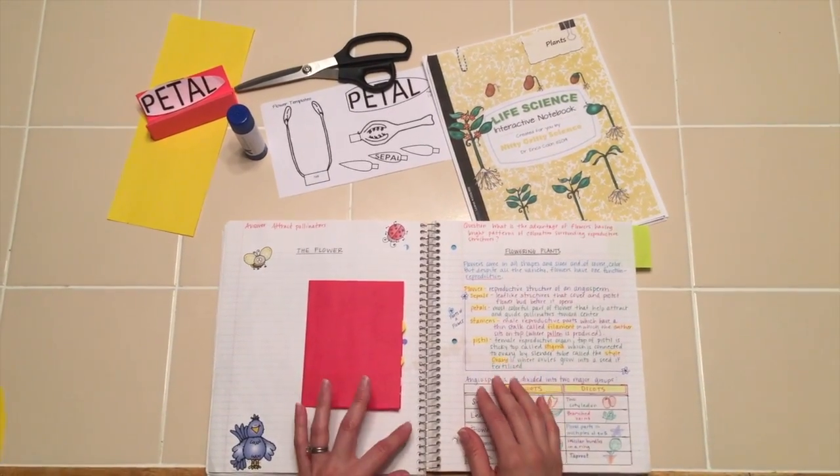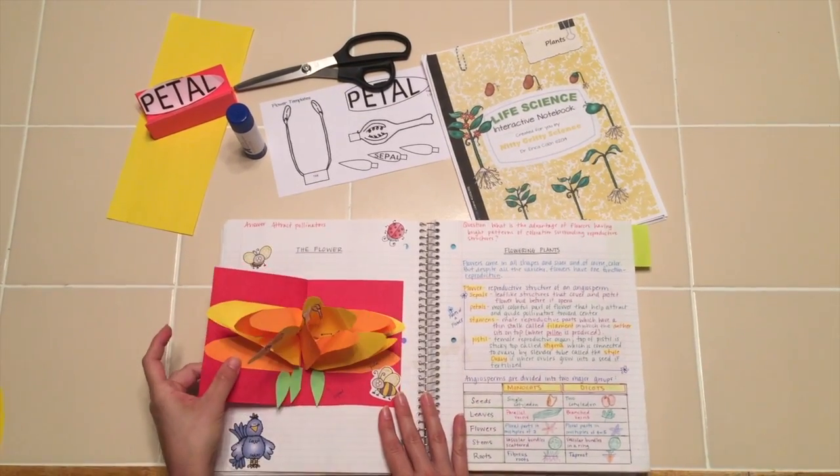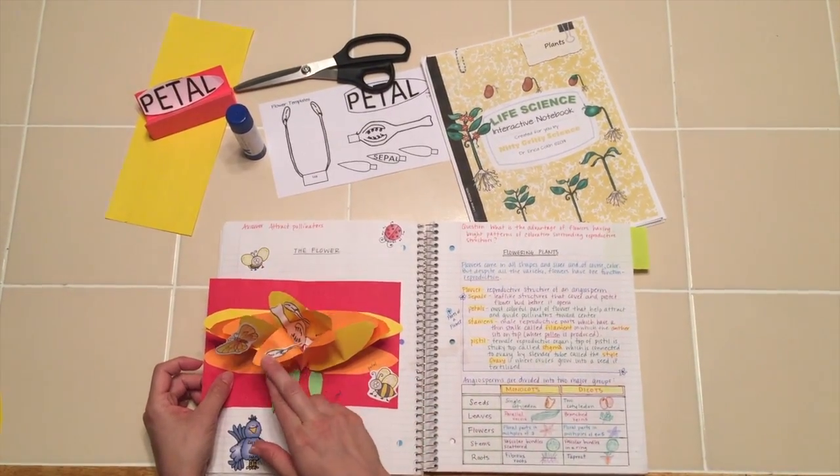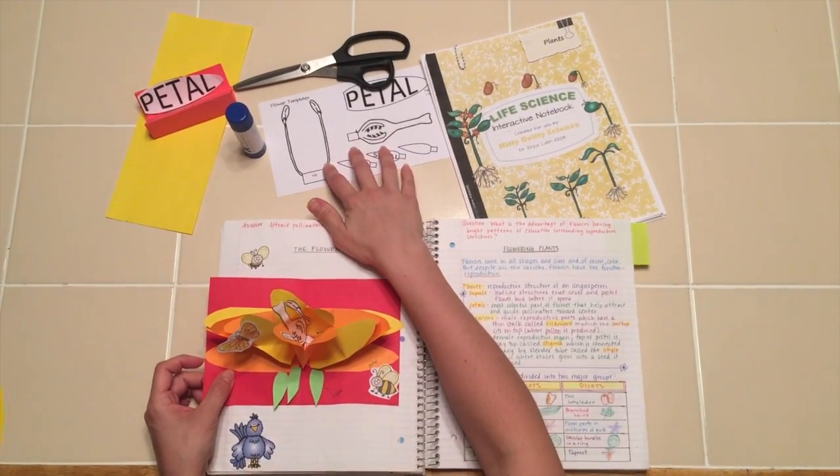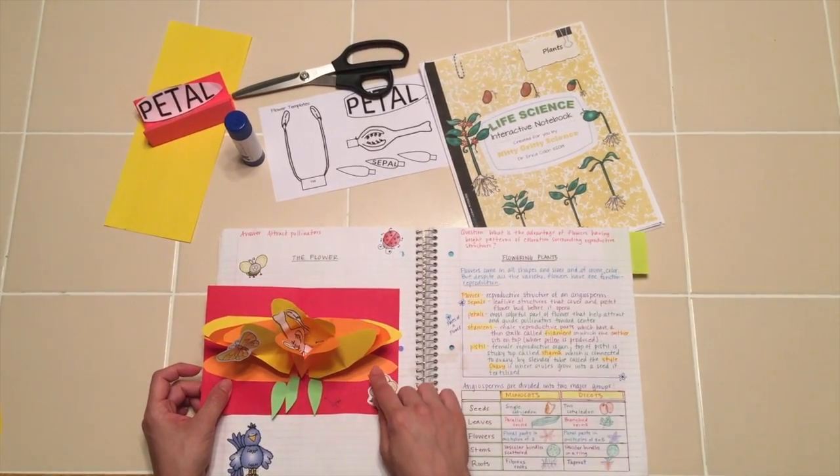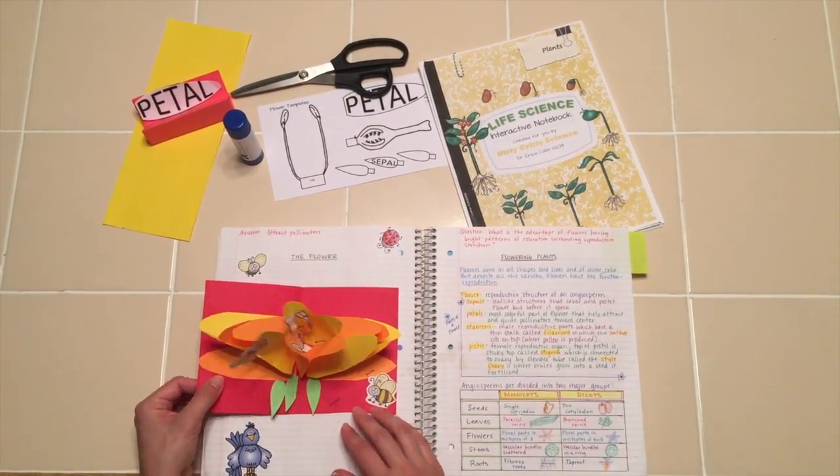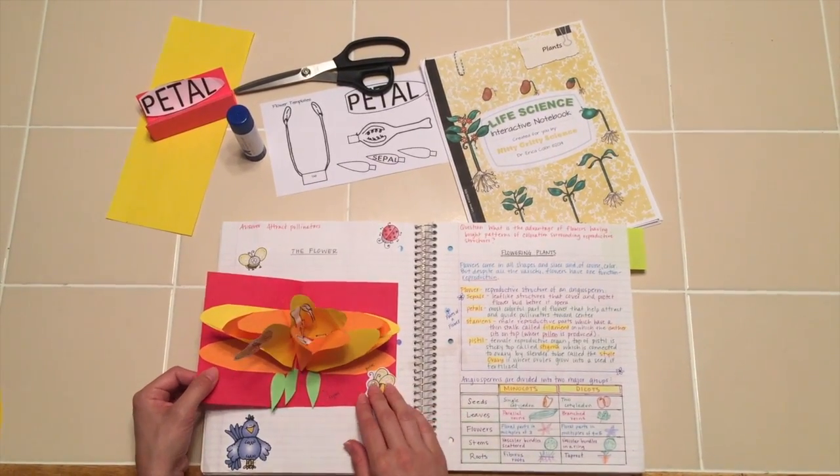Tonight's activity is going to be a 3D flower that students can make. This structure actually folds out, and once they have it, they can put the structures of the flower in, which can also be found as a template. They can label it, add the pieces, and if they want, they can even change the shape of the petal.